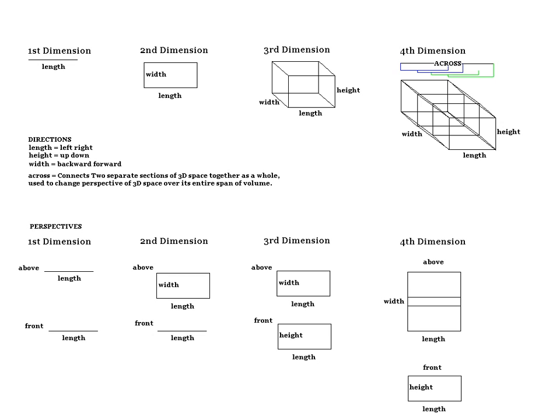meaning that a 4D tesseract or 4D cube consists of two separate three-dimensional volumes combined into one volume of 4D space.